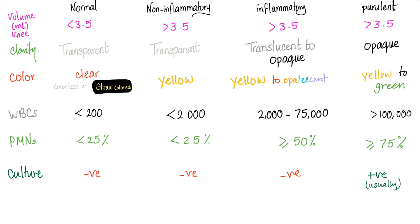So here's the table that will summarize everything for you. Now forget about volume. This is kind of BS. Let's talk about the clarity. Normally, transparent. Non-inflammatory, transparent. Inflammatory, translucent to opaque. Purulent, opaque. How about the color? Normally, should be clear, colorless. Non-inflammatory, yellow. Inflammatory, yellow to opalescent. And purulent, yellow to green. White blood cells, normally less than 200. Non-inflammatory, less than 2,000. Inflammatory, 2,000 to 75,000. Purulent, huge. More than 100,000. Then PMNs, normally less than 25, less than 25. Inflammatory, more than 50. Purulent, more than 75%. Culture, negative, negative, negative, positive, usually. So, normal is here. Osteoarthritis is here. Rheumatoid arthritis is here. Sjogren, here. Lupus, here. How about purulent? This is the septic arthritis, baby. Including gonococcal arthritis.